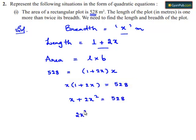We can write 2x squared plus x. Transposing 528 to the left-hand side, we get minus 528 equals 0.